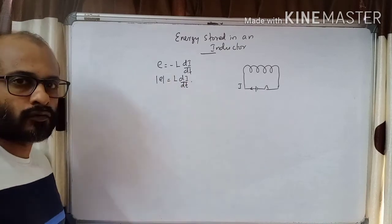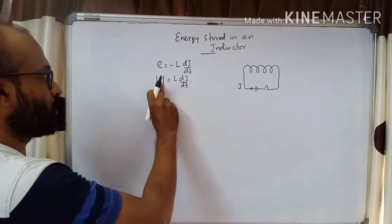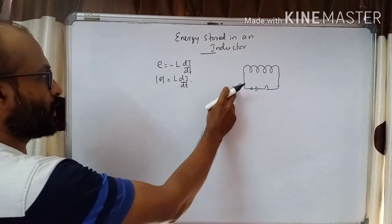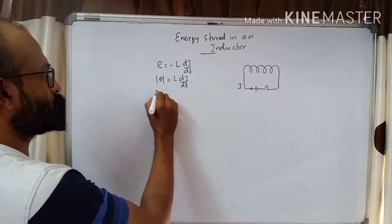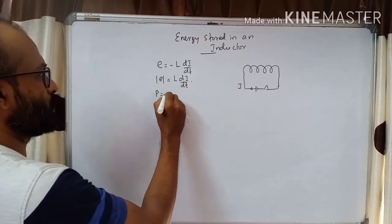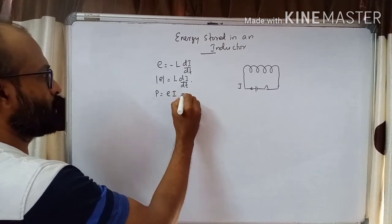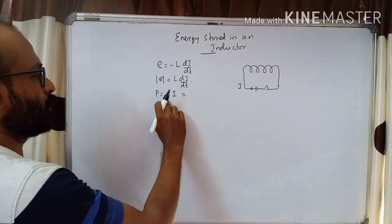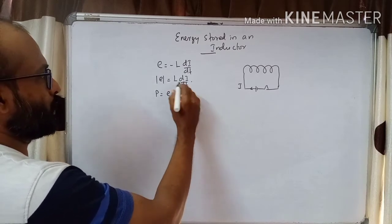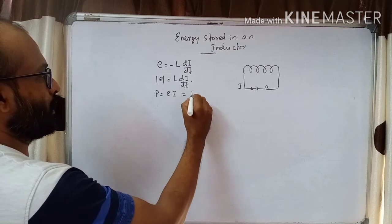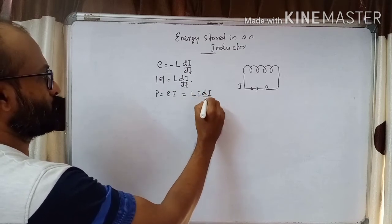Now we need to find the power corresponding to this voltage. If I is the current, power is equal to voltage times current, that is E times I. So power P is equal to L times dI/dt times I.